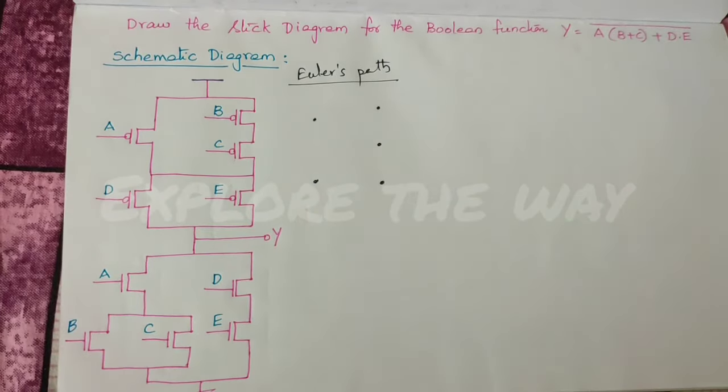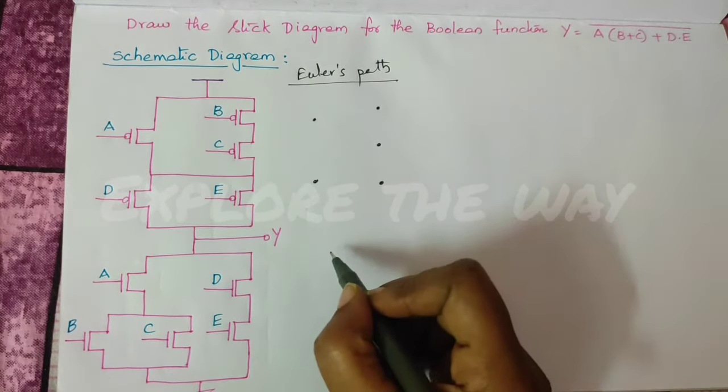Now, place one dot for every transistor. Similarly, pull-down network.